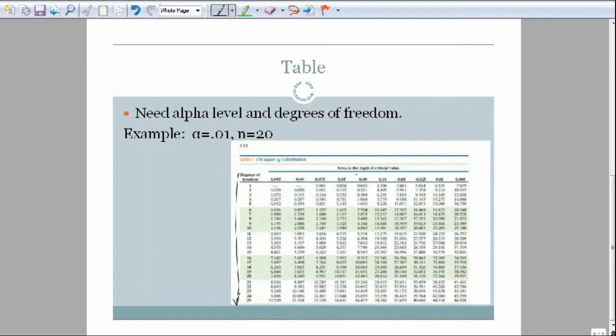Across the top, you'll notice that the numbers start out pretty large for levels like .995 and .99. I know it's hard to read this table, but then all of a sudden it goes to .90 and then drops down to .10.